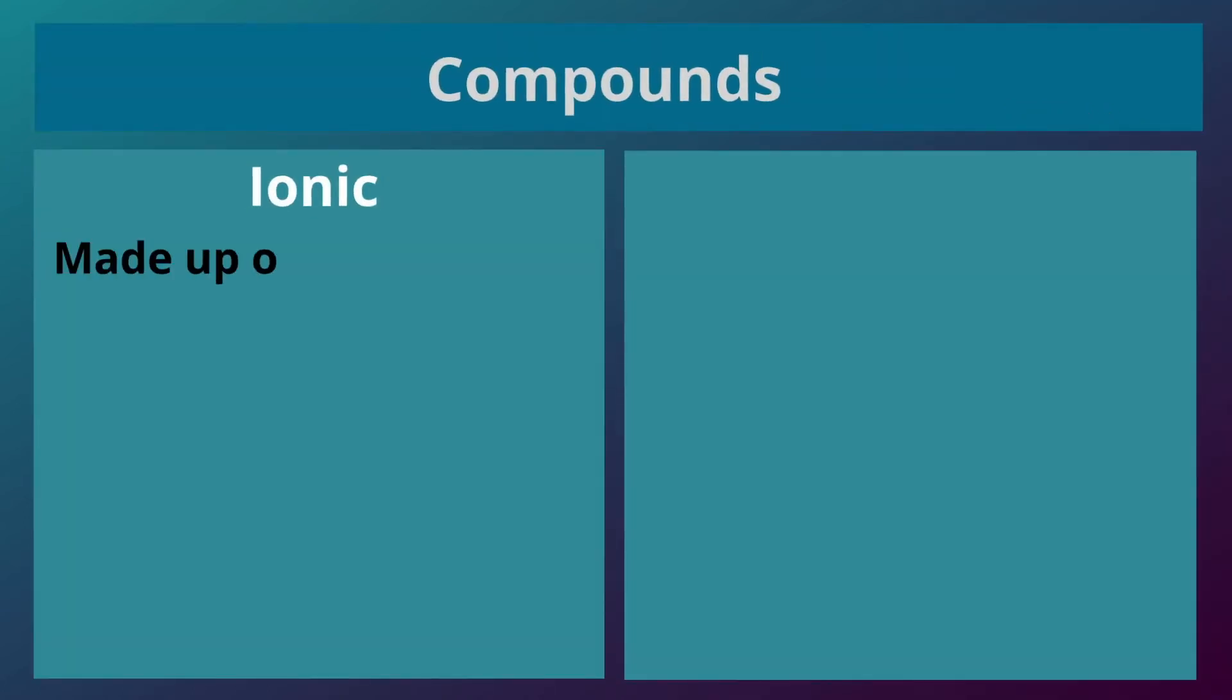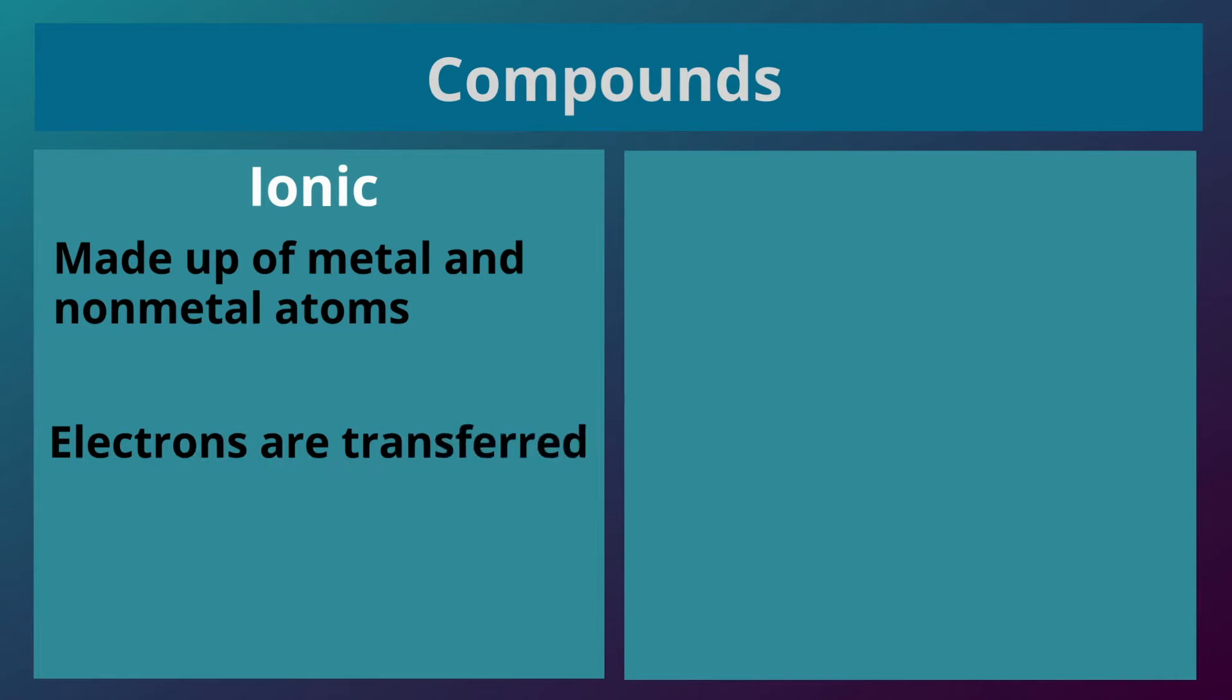Ionic compounds are made up of metal and non-metal atoms. The electrons are transferred. Atoms create ions and form strong attractions.